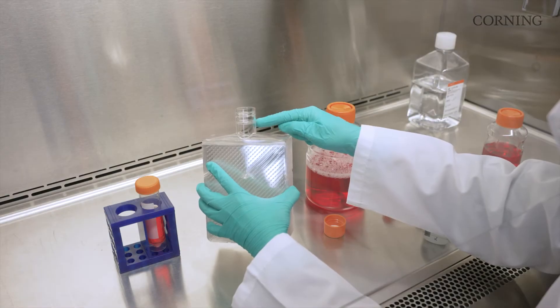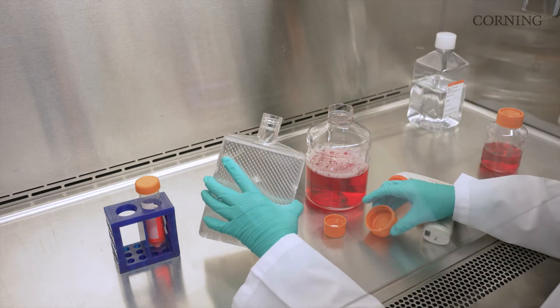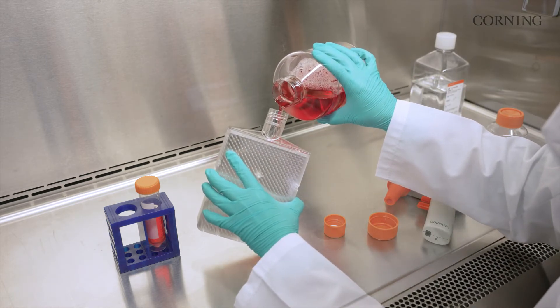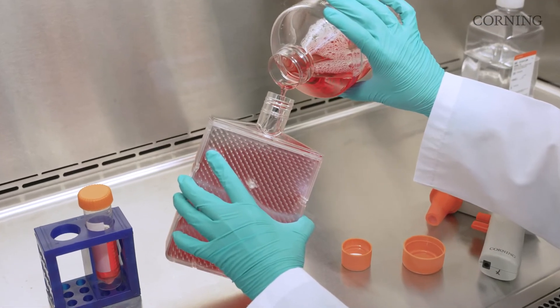When pouring, try to make as much contact with the inside of the flask neck to reduce foaming. You could also fill the entire vessel by using a 100 milliliter pipette.